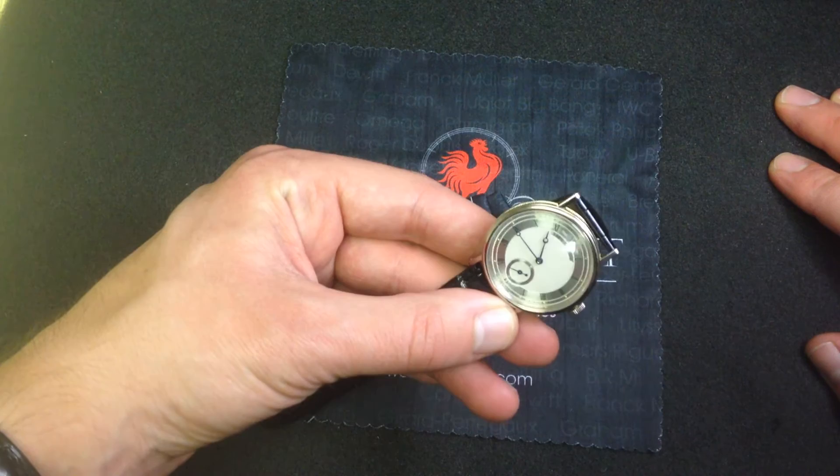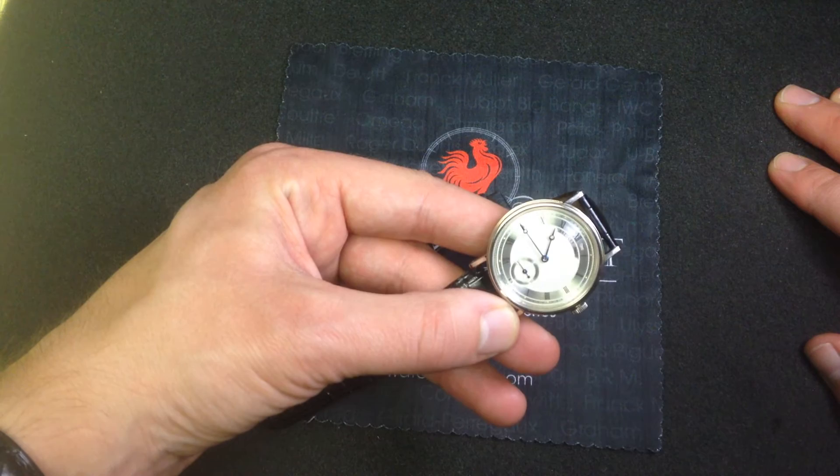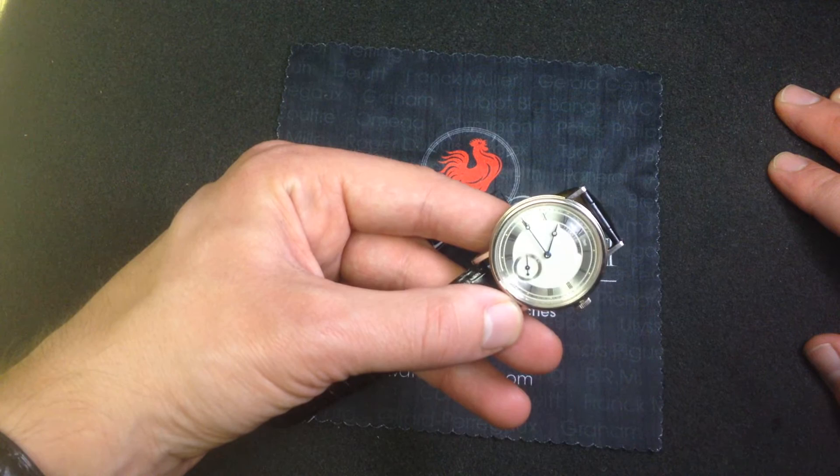The dial is iconic of Breguet pocket watches, here rendered in a roughly 35-millimeter 18-carat white-gold case. This is actually an 18-carat yellow-gold dial.